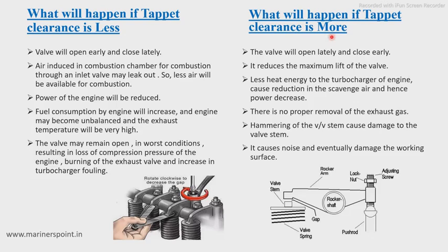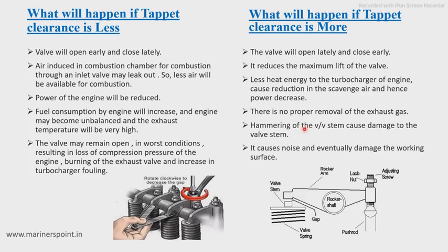If the tappet clearance is more, it will reduce the maximum lift of the valve, as the valve opens late and closes early. It will also generate less heat energy to the turbocharger, causing a reduction in scavenged air and a decrease in engine power. There will be improper removal of exhaust gas since the valve opens late. Additionally, hammering of the valve stem will cause damage to the valve stem and create noise that eventually damages the working surface of the valve.